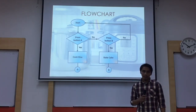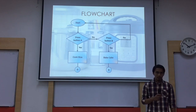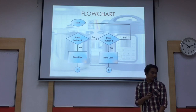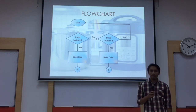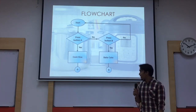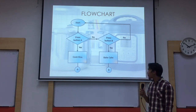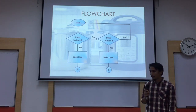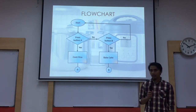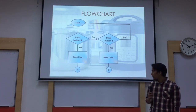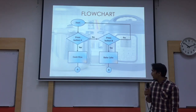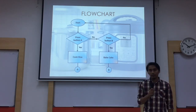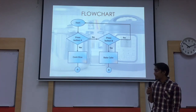Now moving on to the flowchart. As you can see, as soon as we turn on the pressure cooker, we will be given the option to either press button A or press button B. If you press button A, then the pressure cooker will do the process of cooking rice. On the other hand, if you press button B, then it will do the process of baking a cake.